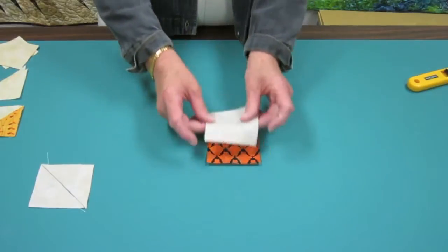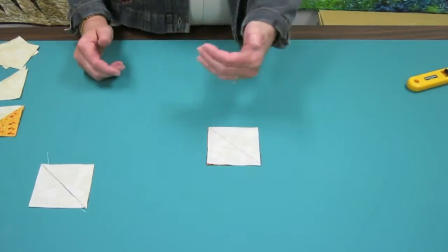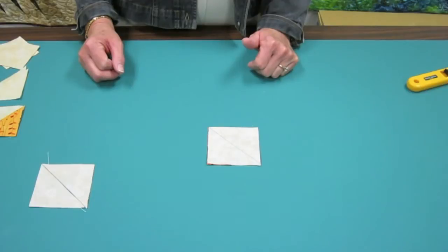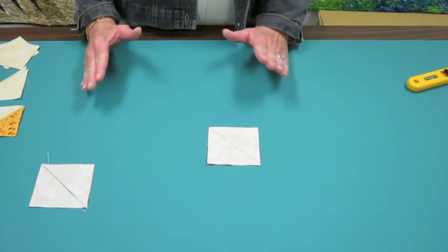when you sew these guys together, one tends to scoot off the other and then your squares are not completely square or the same size.